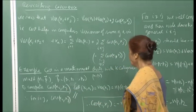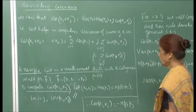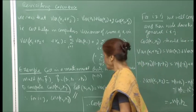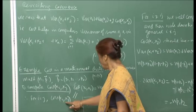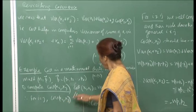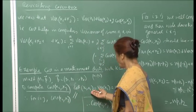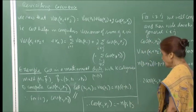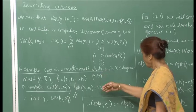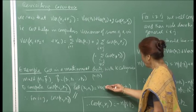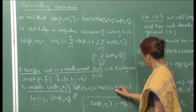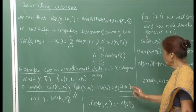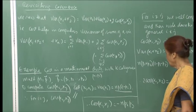Now, to compute Cov(Xᵢ, Xⱼ): for i equal to j, Cov(Xᵢ, Xᵢ) equals Var(Xᵢ). Since each Xᵢ is Binomial(n, pᵢ), we know from the binomial variance formula that Var(Xᵢ) = n·pᵢ·(1 − pᵢ).